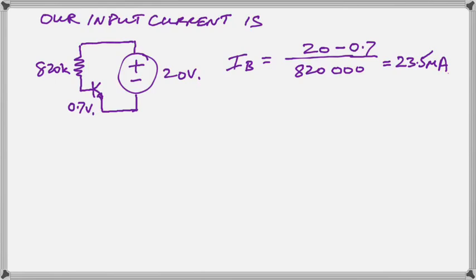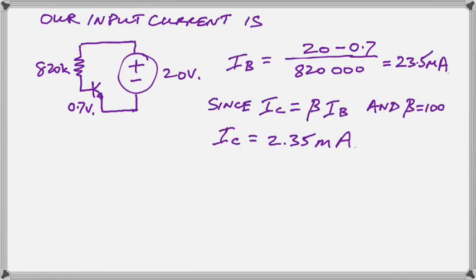Okay, so it's easy to work out the current in that loop. We simply take away the 0.7 volts from the 20 volts and the remaining voltage is sitting across the 820k resistor. So by Ohm's law, we have V over R and the result is 23.5 micro amps for the base current. Since the collector current now is only 100 times that because our beta is 100 on this transistor that we're investigating, we just multiply it by 100 and that gives us a collector current of 2.35 milliamps.